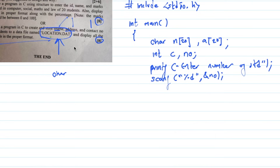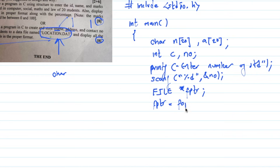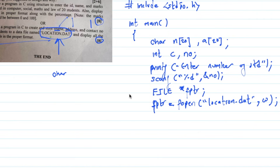If you want to store data to a file, you need to open the file using a file pointer. You can find the file pointer and use it. This line is very important — using the file pointer to point to the file.